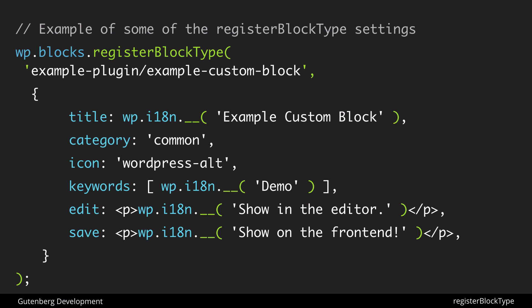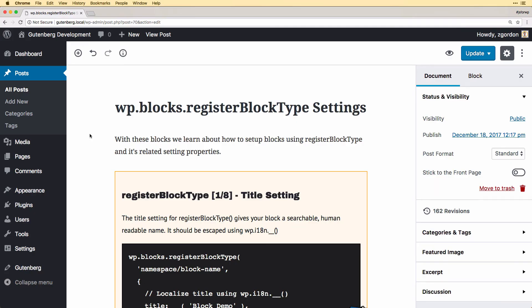The edit and save properties here are pretty simple — basically just outputting a paragraph that says 'shown in editor' and one that says 'shown on the front end.' This is an oversimplification, and we don't even have attributes listed here because we don't yet have dynamic editable data. Over the next few videos we'll be looking at each one of these settings in depth so we really understand how they work, because once you understand them it really just comes down to: can I build my block with the JavaScript I know?